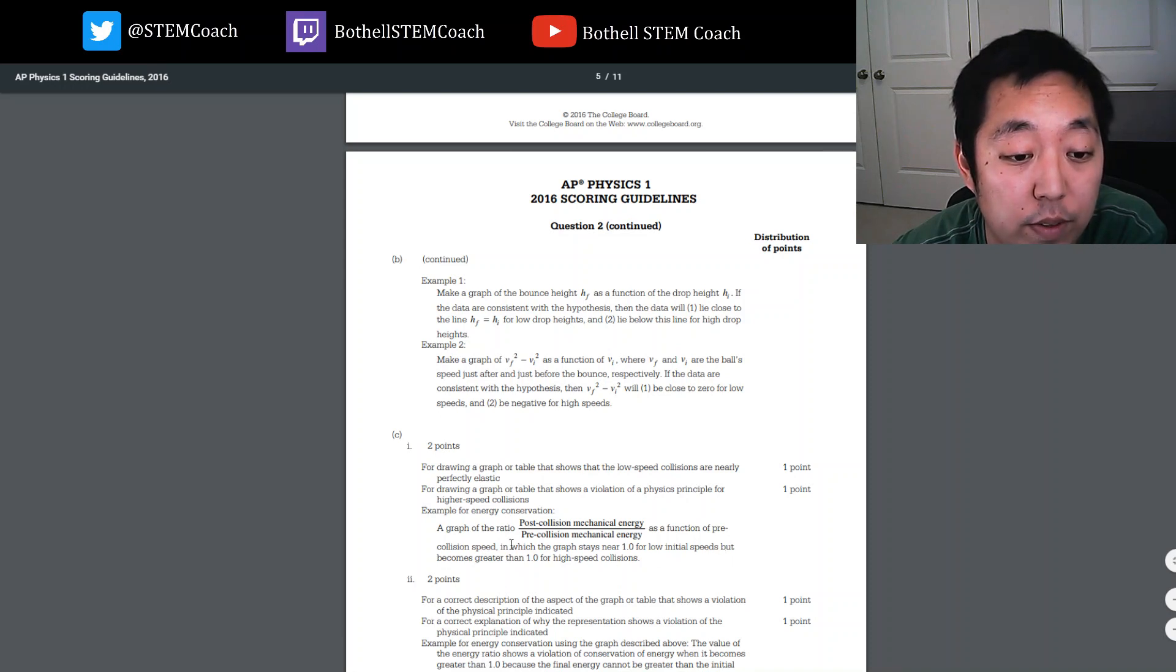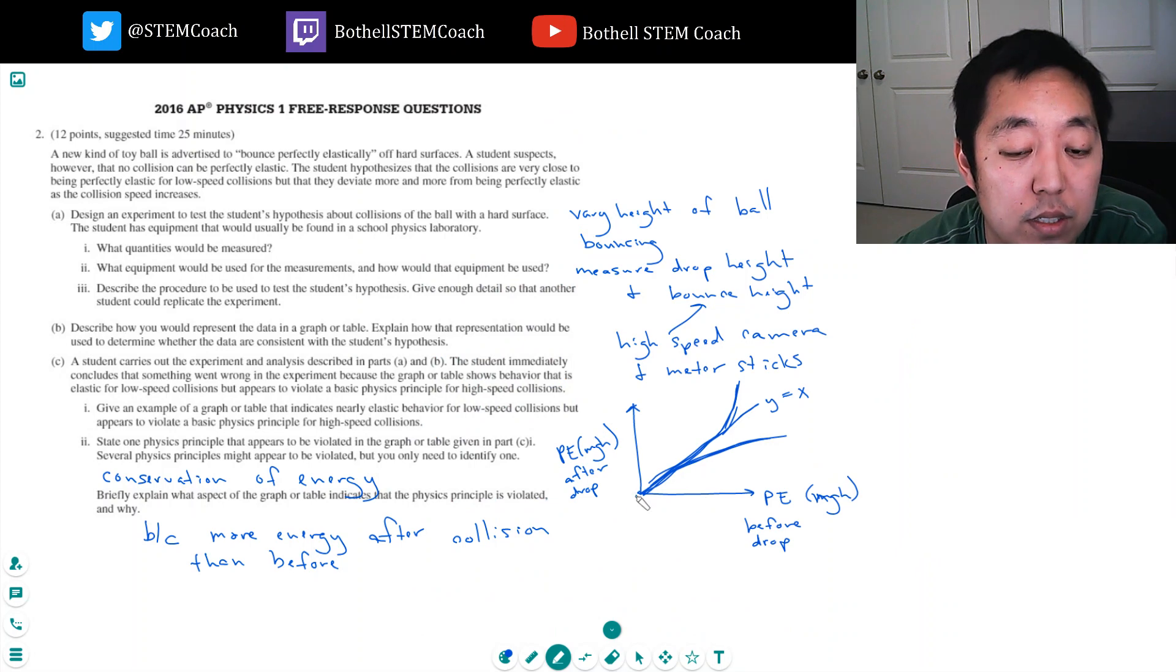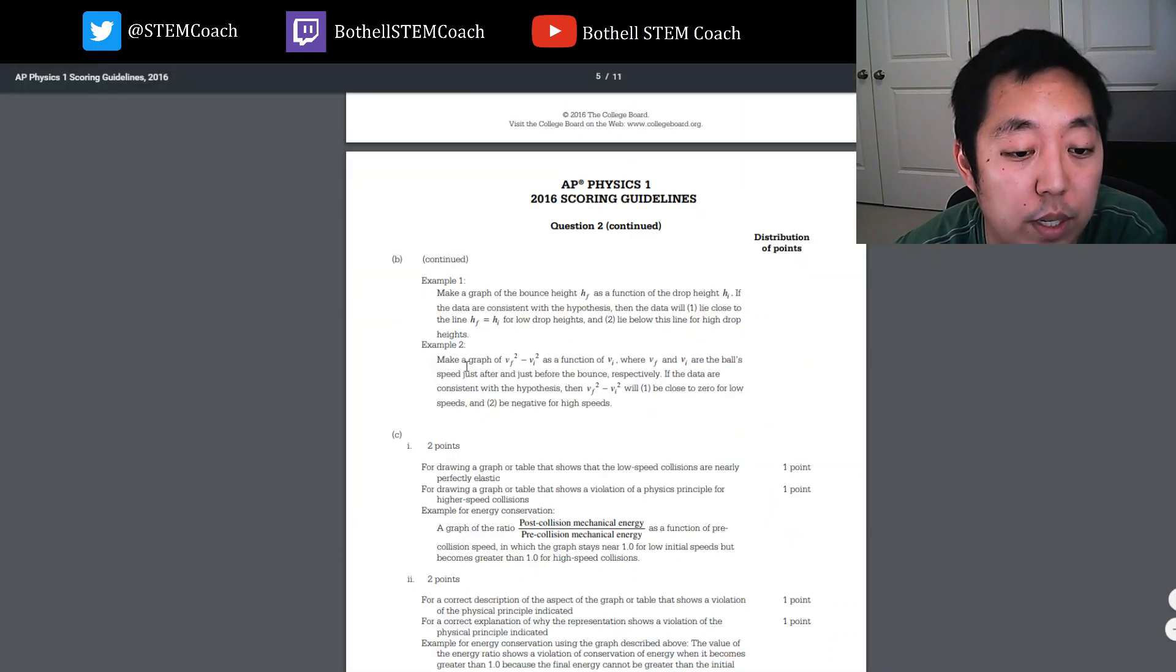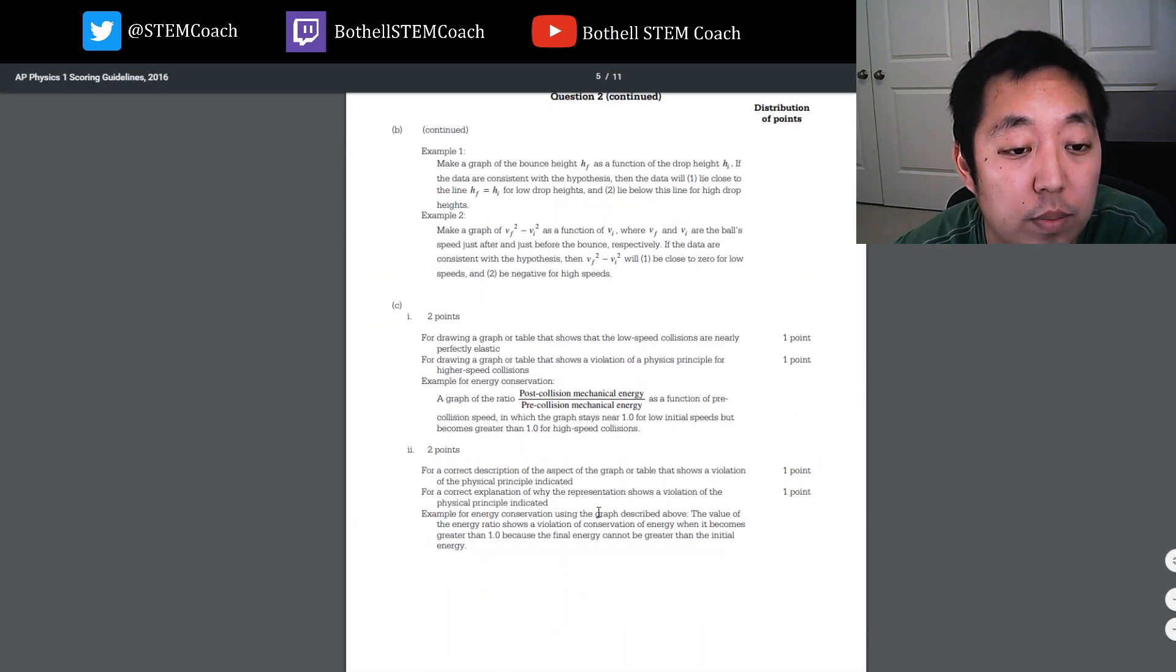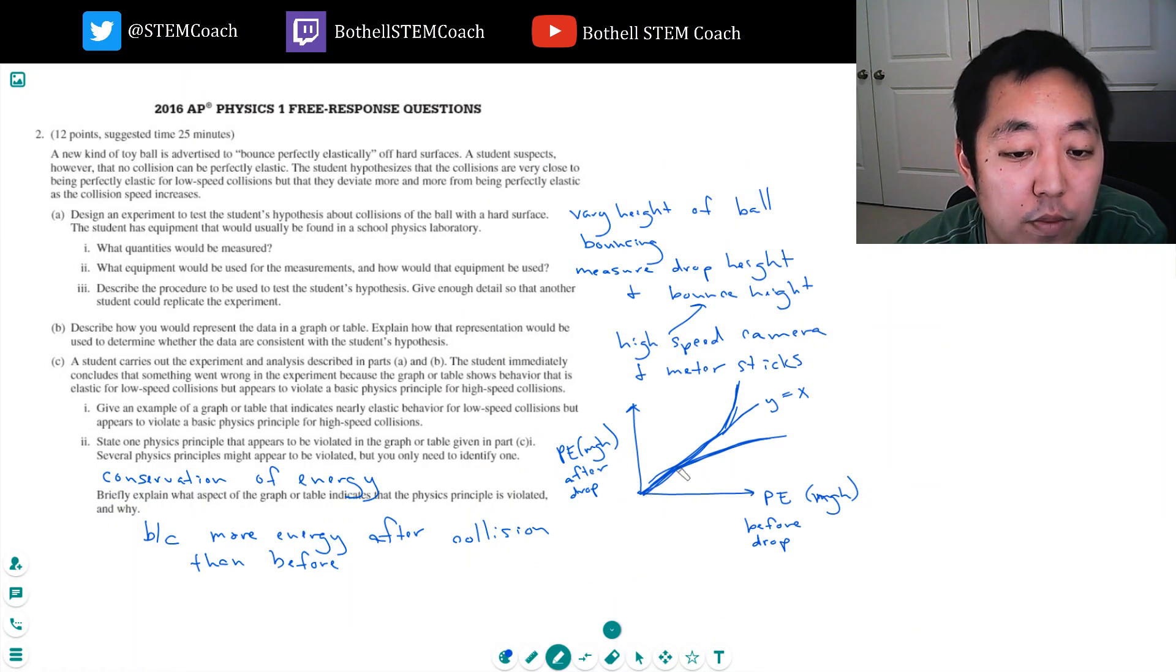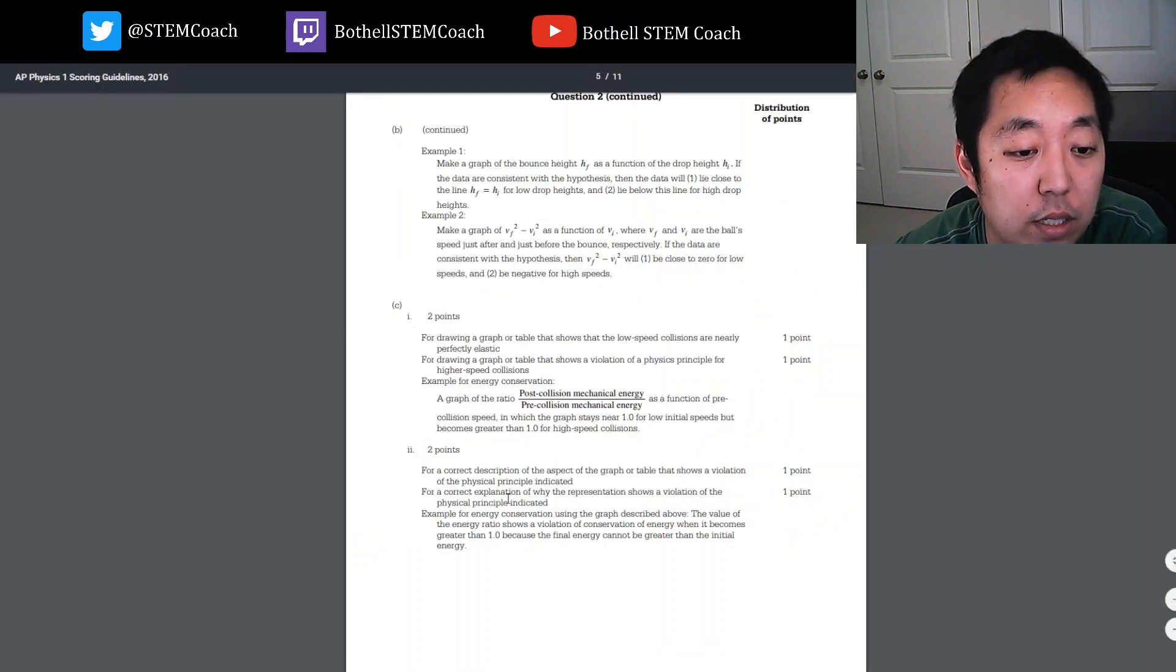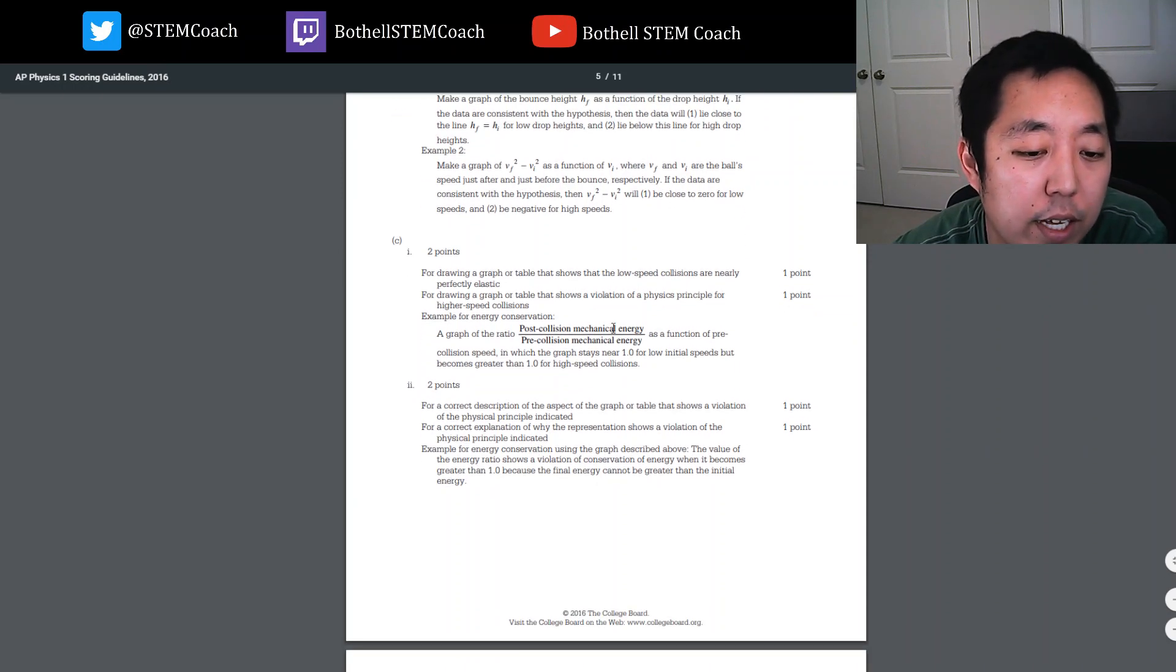A graph of the ratio as a function of pre-collision speeds where it stays near one. So yeah, you could do this ratio. I just did it as a line like this, right, where the ratio is one. But I drew that it was nearly elastic for low speed and then as it deviated it would kind of go further away from being perfectly elastic. Example of energy conservation, yeah, so I think I scored all the points. I don't go into a lot of details on these, but yeah, I hope that helped you.